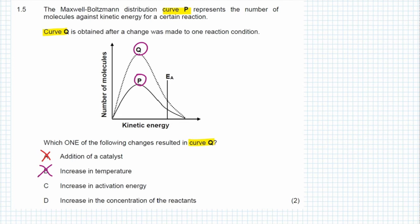C says an increase in activation energy. If the activation energy was increased, the line for the activation energy would move to the right. But that did not happen, so we know that C is incorrect.